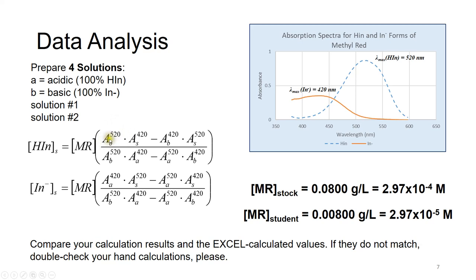In the notation, uppercase A means absorbance. B stands for the 100% basic solution, and 520 is the wavelength in nanometers. So A_B,520 means the absorbance at 520 nanometers of the 100% basic solution. For solution one, we use its absorbance at 420 nanometers. We collect all those data and plug in the numbers to determine concentrations of HIn and In⁻ in solutions one and two. We calculate a pKa from each solution — these two values should be close to each other — and then we take the average.